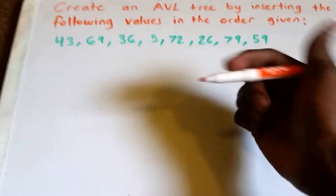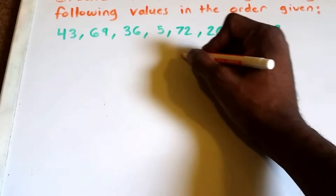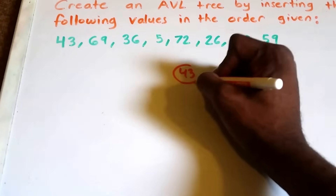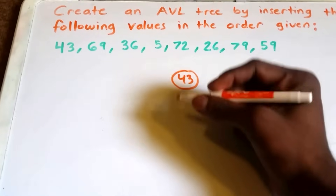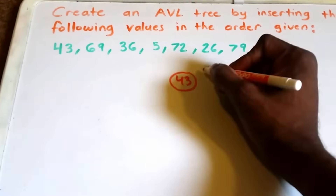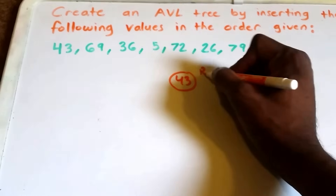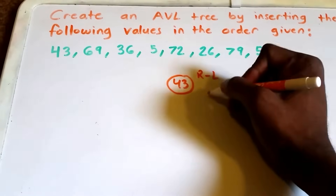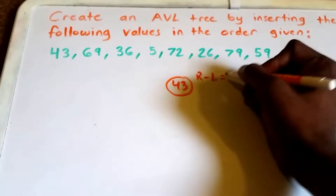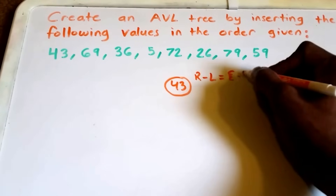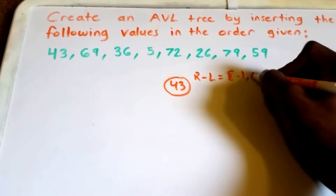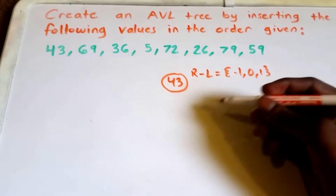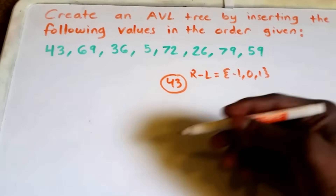Let's get started. First we're going to insert the value 43 into our tree, then check the balance factor of the node, which is the right subtree minus the left subtree. The value must equal either -1, 0, or 1 for the tree to be considered balanced.